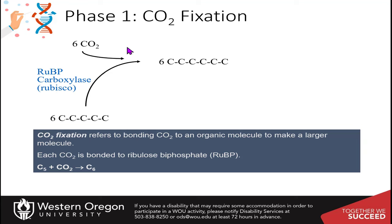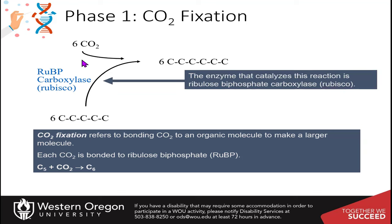All of the carbons going into generating our glucose are coming from carbon dioxide. The enzyme that catalyzes this reaction is ribulose 1,5-bisphosphate carboxylase, more commonly known as Rubisco. We'll talk more about the details of the enzymatic activity of this step.